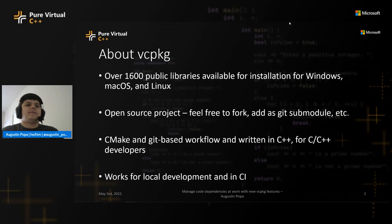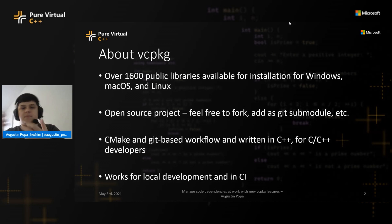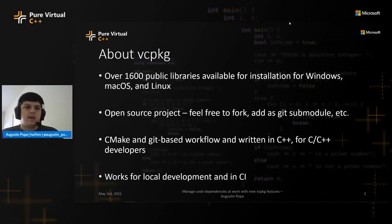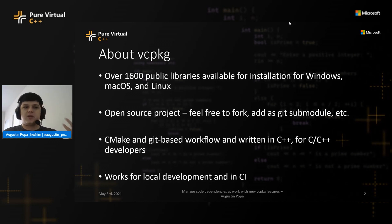vcpkg is designed to help solve that. As it stands today, vcpkg has over 1,600 public libraries — popular open source projects as well as smaller ones. You can install them for Windows, macOS, and Linux, assuming the libraries themselves support those platforms. The project itself is open source on GitHub, and we get quite a lot of open source contributors. We really wouldn't have grown as fast without their support.